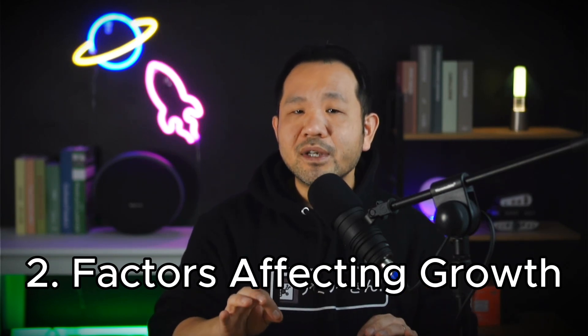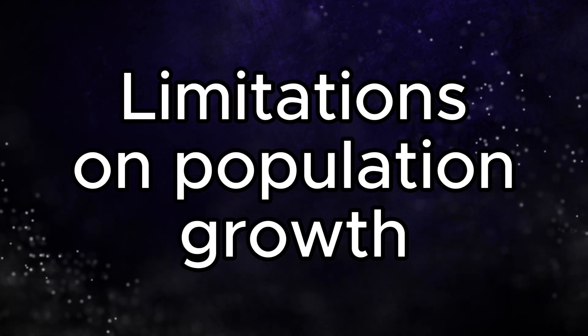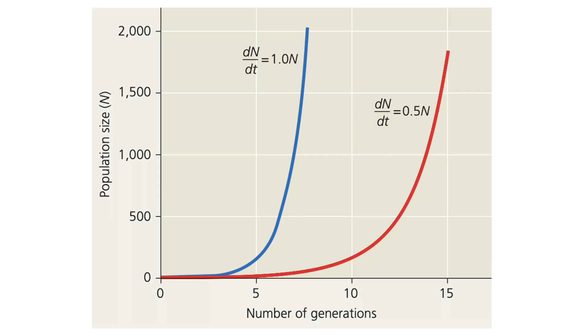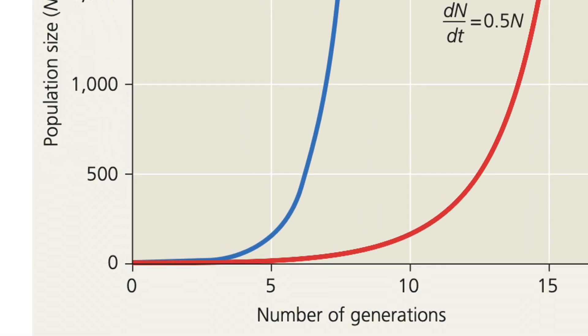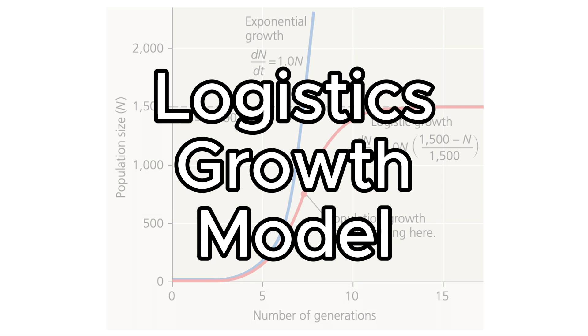Now that we have the dynamics of population size covered, let's discuss factors that could limit population growth and ultimately the size of the population. We don't really talk much about what increases population growth because life finds a way. What we really want to discuss is what limits population size. Even asexually reproducing organisms should exhibit exponential behavior in growth — 1 becomes 2, 2 becomes 4, 4 becomes 8, and so on. But as Thomas Malthus and Darwin previously stated, all living things are limited by the finitude of resources in their environments. A more realistic model of population growth is the logistic growth model.